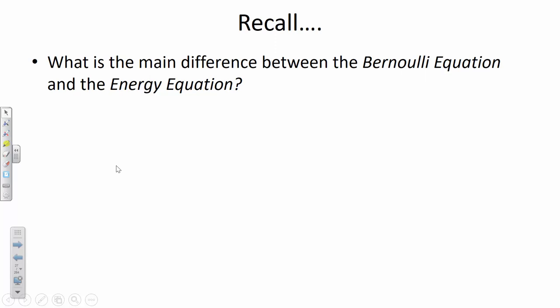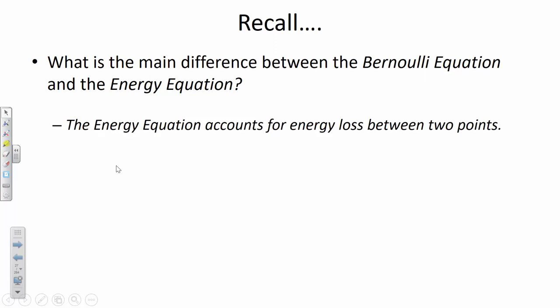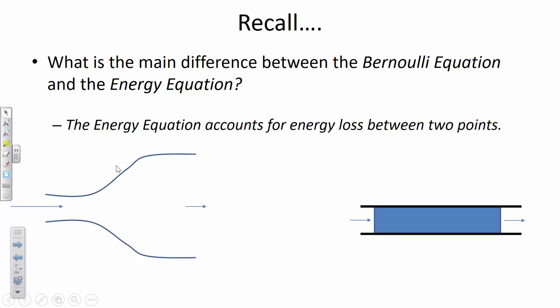Remember that you first learned Bernoulli's equation. What's the main difference between Bernoulli's equation and the energy equation? Because they have a lot of the same terms. Head loss — exactly right. The energy equation accounts for energy loss between the two points. We use Bernoulli's equation in situations like an expanding pipe section where there's a change in diameter and the velocity is decreasing.